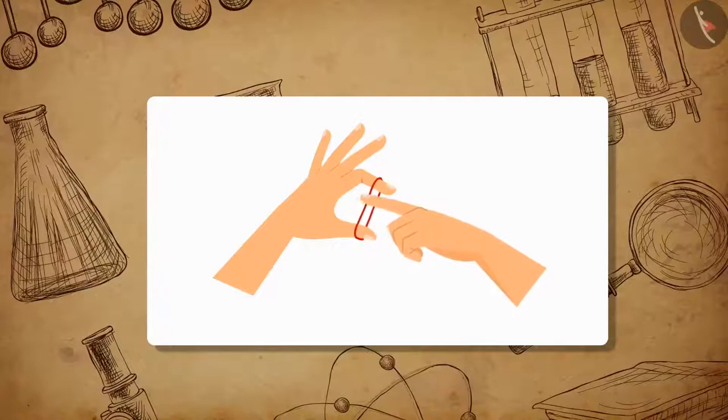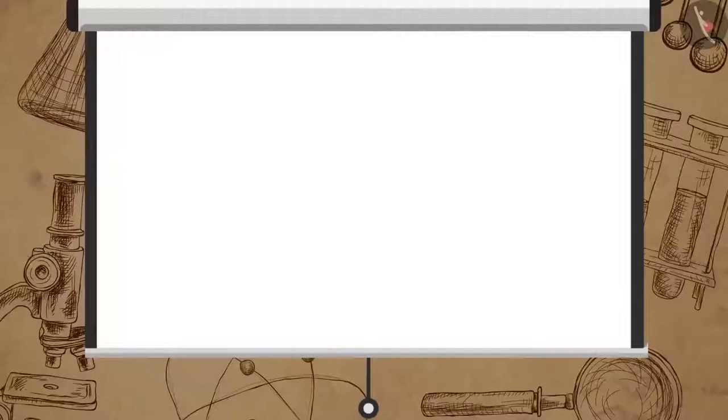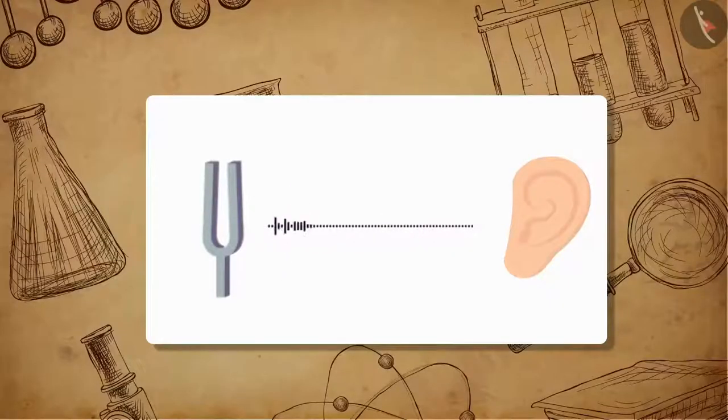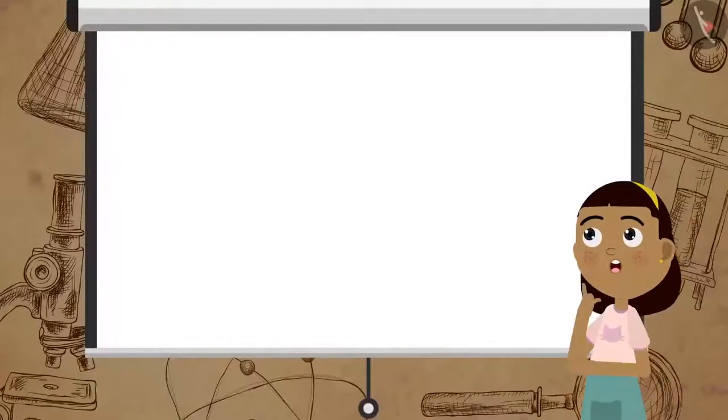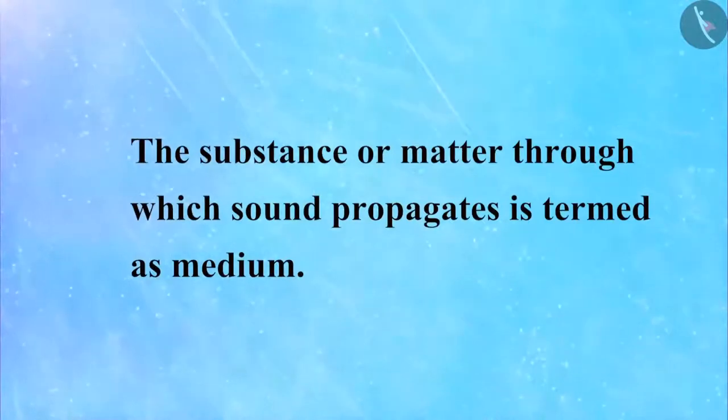Then pluck the rubber band. You will notice that the band vibrates and produces a sound. But how does the sound reach your ears? Sound travels from the point of its origin to the receiving end, and to do so it needs a medium to travel. The substance or matter through which sound propagates is termed as medium.